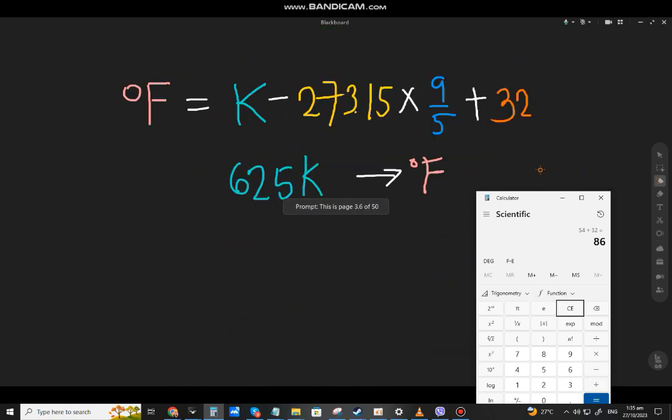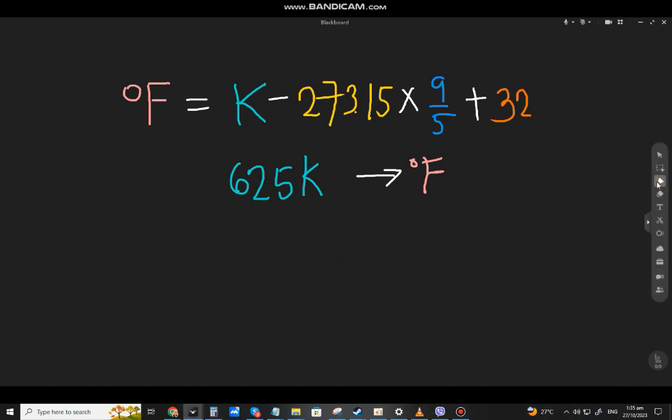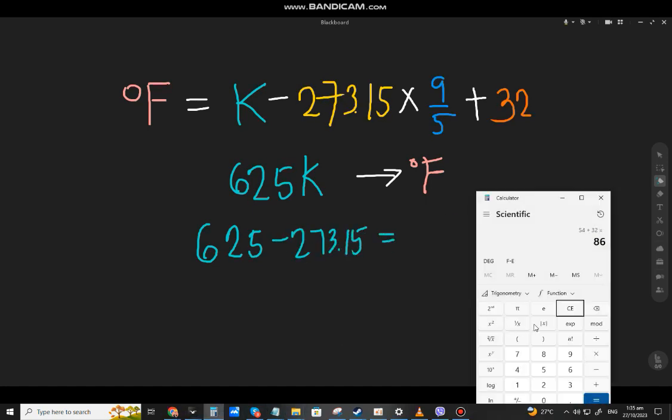Next one: How about this one? 625 Kelvin. Same thing we'll do. Let's subtract. Remove the Kelvin symbol first. 625 minus 273.15. Use the calculator.